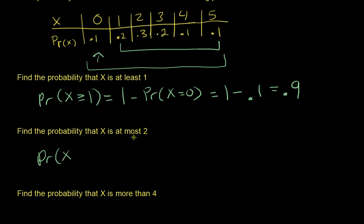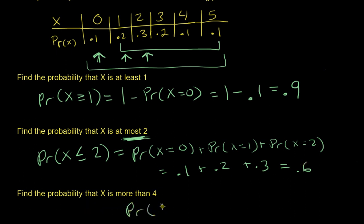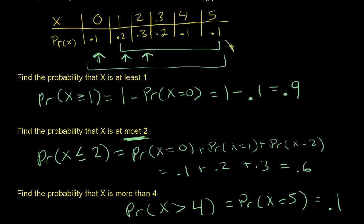Next, P(X ≤ 2) — 'at most two' means X can be 0, 1, or 2. So P(X=0) + P(X=1) + P(X=2) = 0.1 + 0.2 + 0.3 = 0.6. For P(X > 4) — 'more than four' — only X=5 qualifies, so the probability is 0.1.